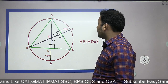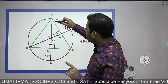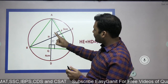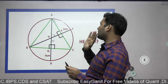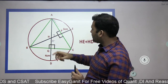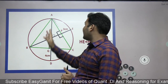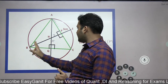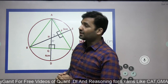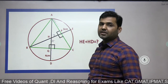If I treat AC as a mirror, the image of H will be made on the circumference of the circle. If I treat BC as a mirror, the image of H will lie on the circumference of the circle. If I treat AB as a mirror, the image of H will also lie on the circumference of the circle. That means the distance from H to the side and from the side to the image will always be equal.